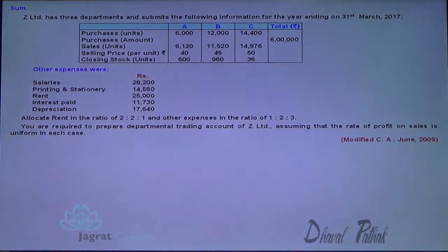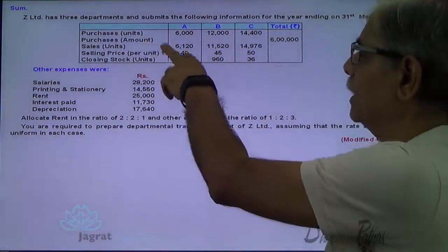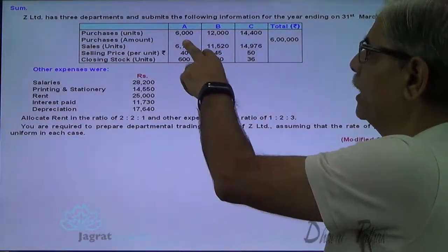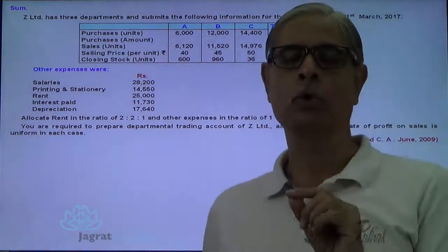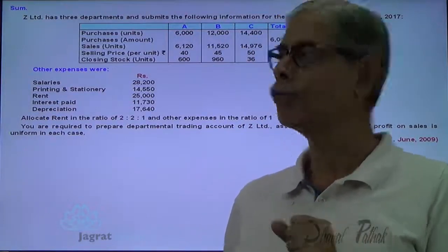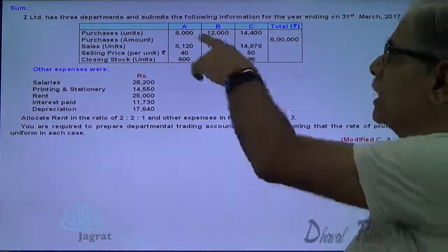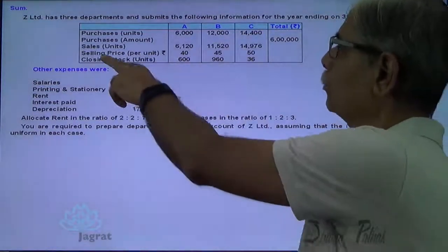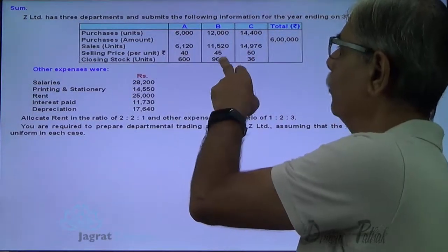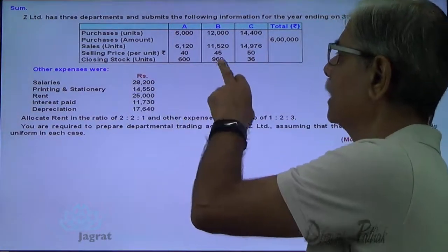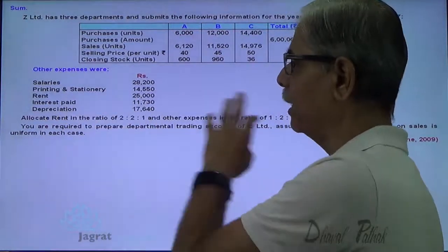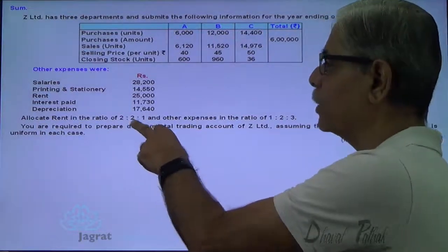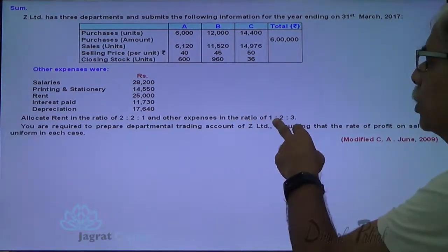Z Limited has three departments and submits the following information for the year ending 31st 2017. Purchases: Department A units 6,000; B 12,000; C 14,400. Total purchases: 6 lakhs for all three departments together. Sales price per unit: 40, 45, 50. Closing stock in units: 600, 960, 360. Other expenses include salaries, printing and stationery, rent, interest paid, and depreciation. Allocate rent in the ratio 2:2:1 and other expenses in the ratio 1:2:3.